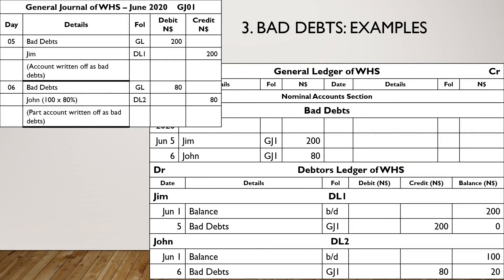Let's now look at examples of posting bad debts. You debit Bad Debts and the details is the debtor's name — in this case Jim. Credit Jim's account and the details is Bad Debts. One more example: debit Bad Debts, details the debtor's account — in this case John — and credit John's account, details Bad Debts.